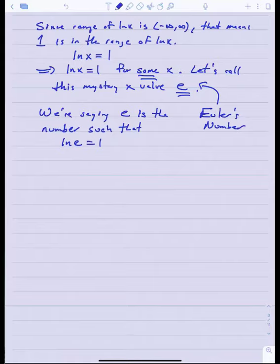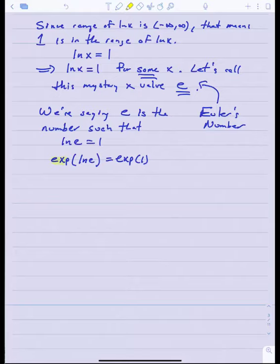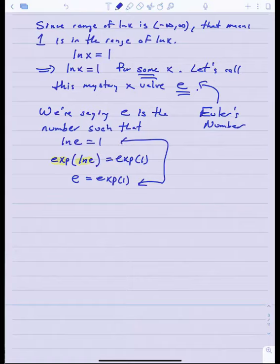I simply know there is some number, so I'm just giving it this name. Another way to say that: if I apply the exp function to both sides of ln of e equals 1, putting exp and ln together means they cancel each other out. What I get is e is equal to exp of 1. Those are dual statements: ln of e equals 1 is the same thing as saying e equals exp of 1.